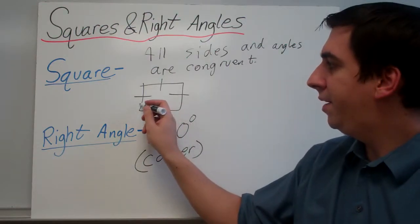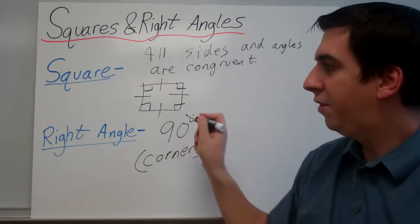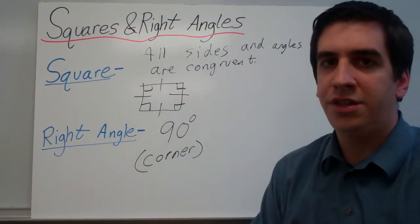And up here we're going to make the notation 90 degrees by drawing a corner in each, with each angle on here.